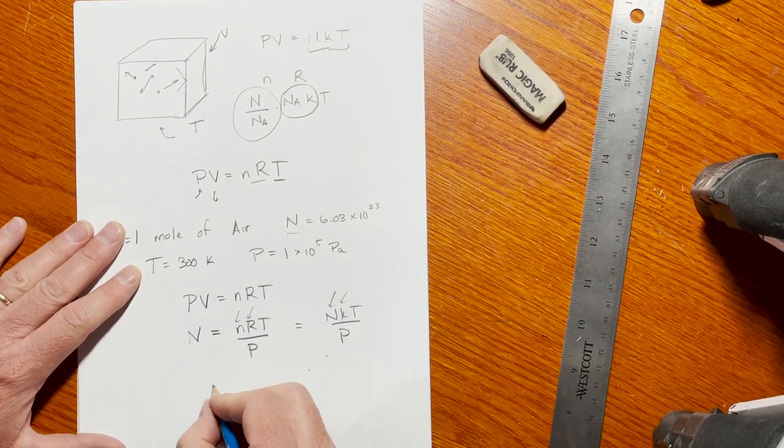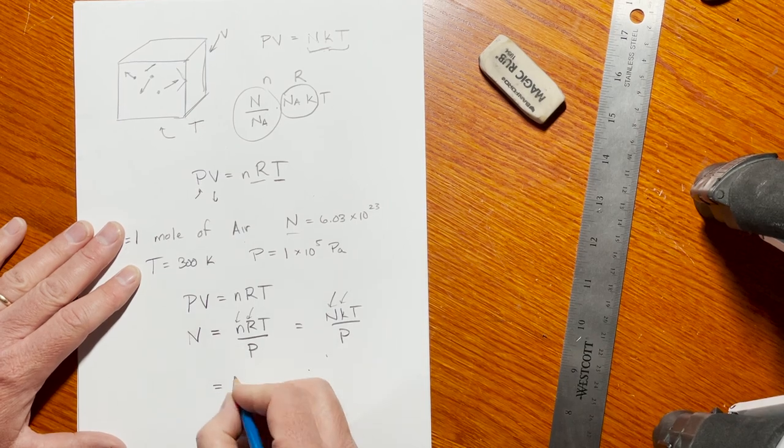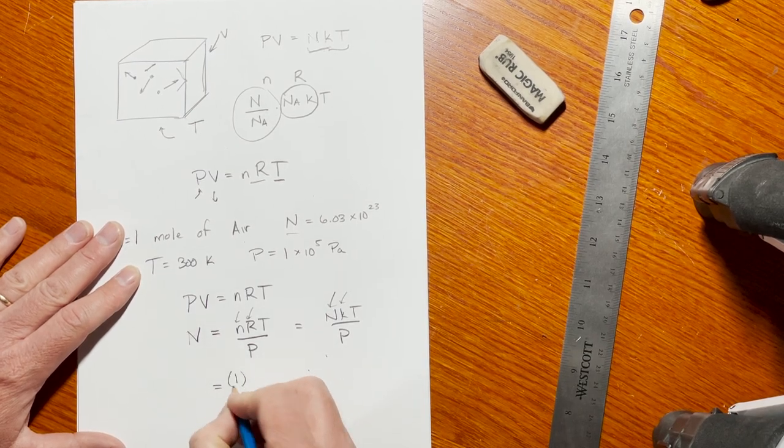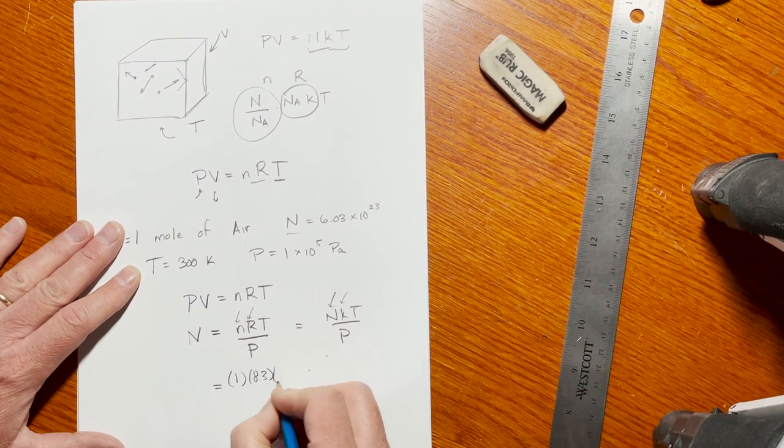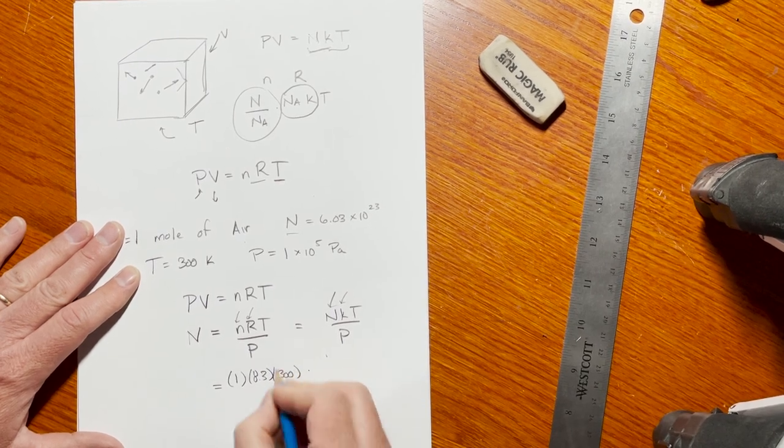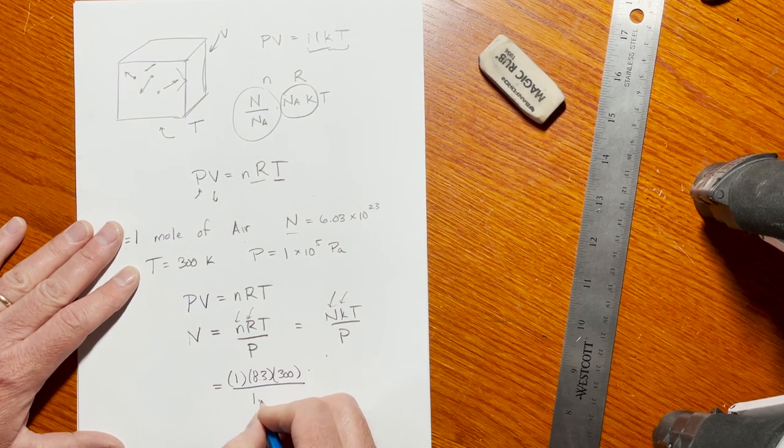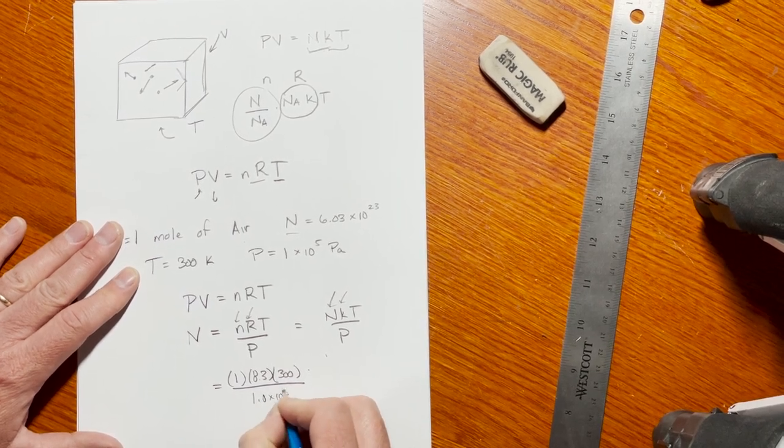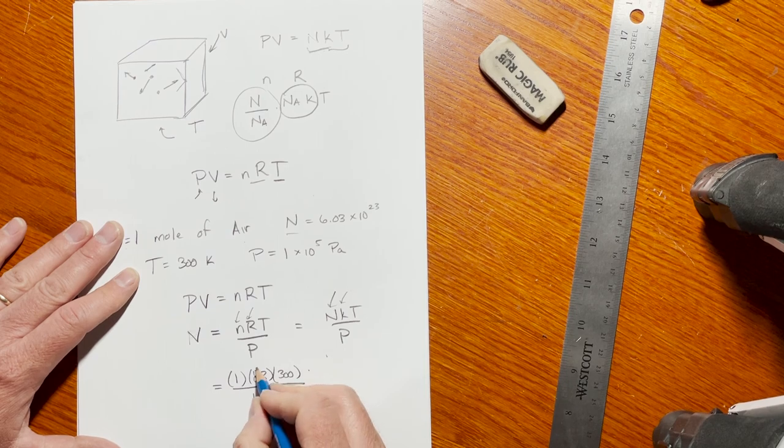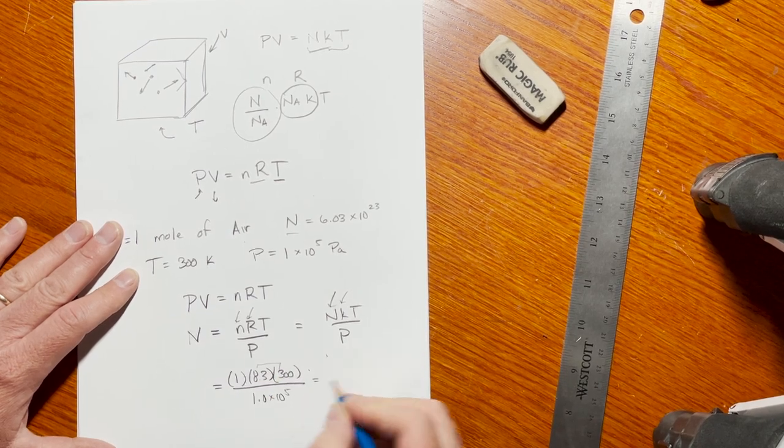I have to use that in Kelvin to make the units work, then divide that by 1.0 times 10^5. If I do that, that's about 2400, and so I wind up getting 2.4 times 10^-2 cubic meters, which is about 24 liters.